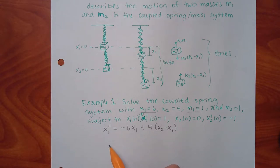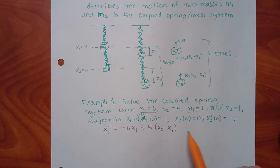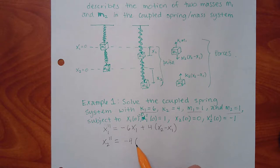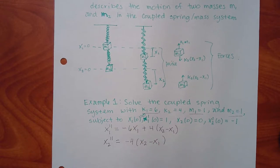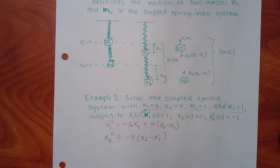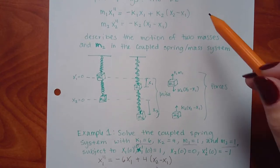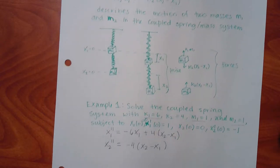Now let's figure out the second equation. M2 is 1, so this is X2 double prime. Then negative K2, which is 4, times X2 minus X1. That's what I have just by plugging these constants into the DE that was set up for me.